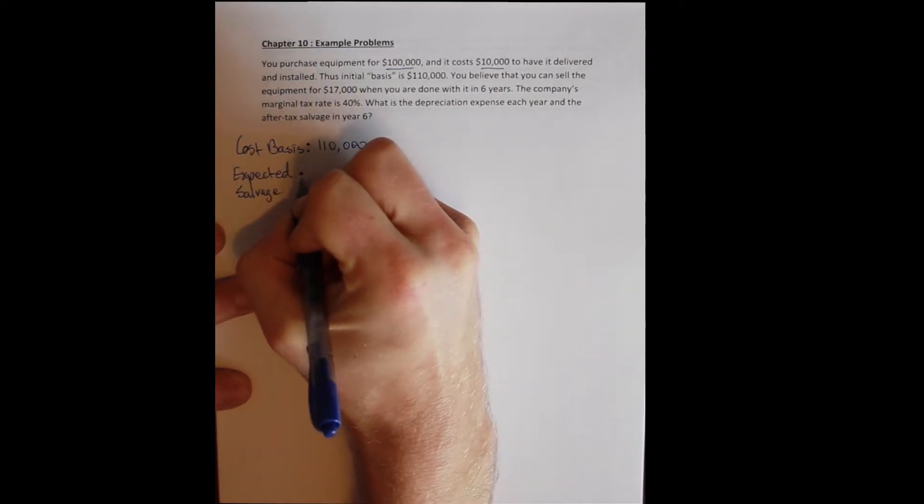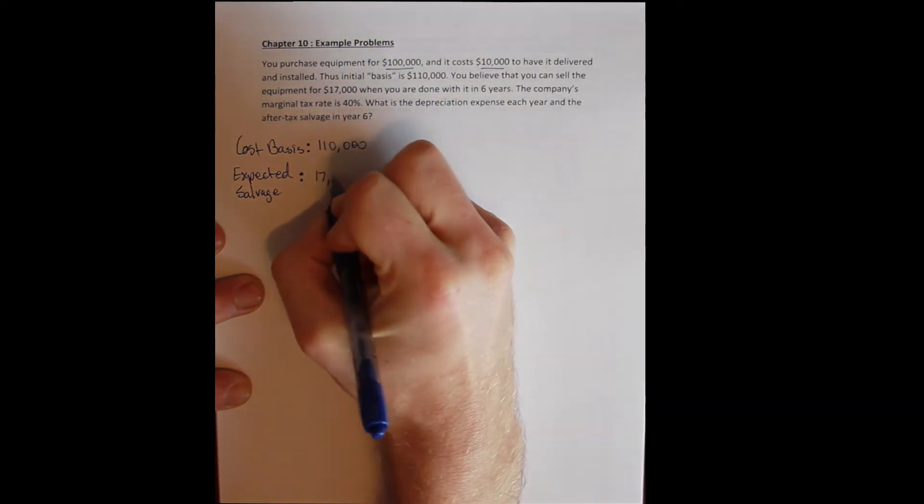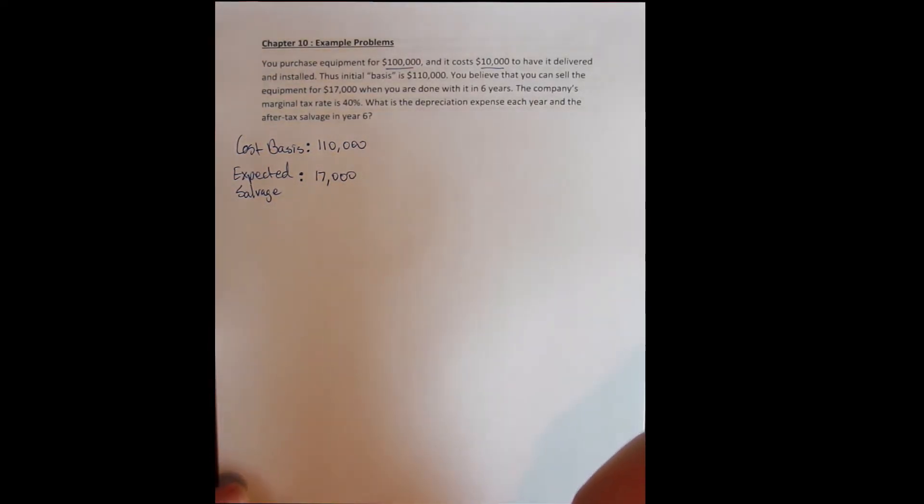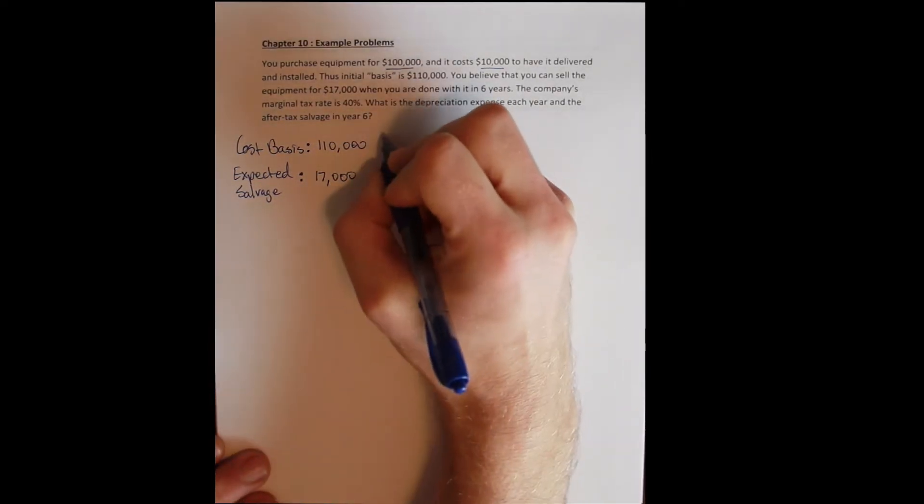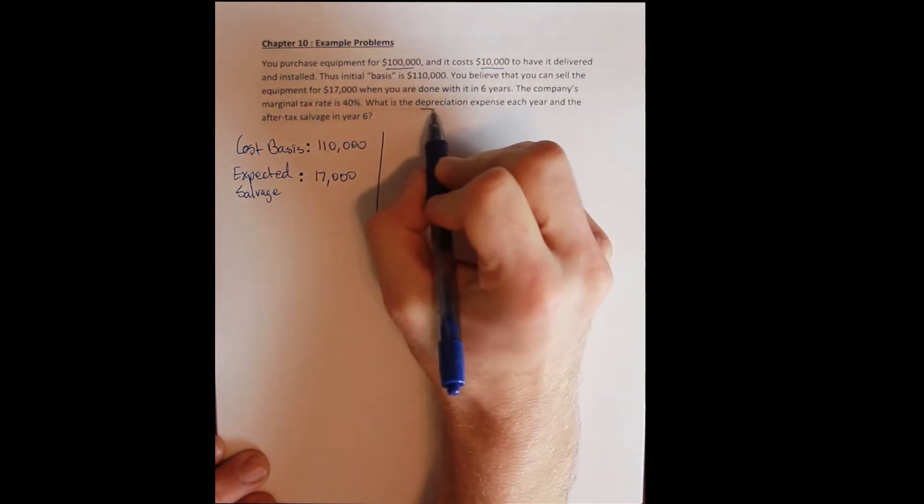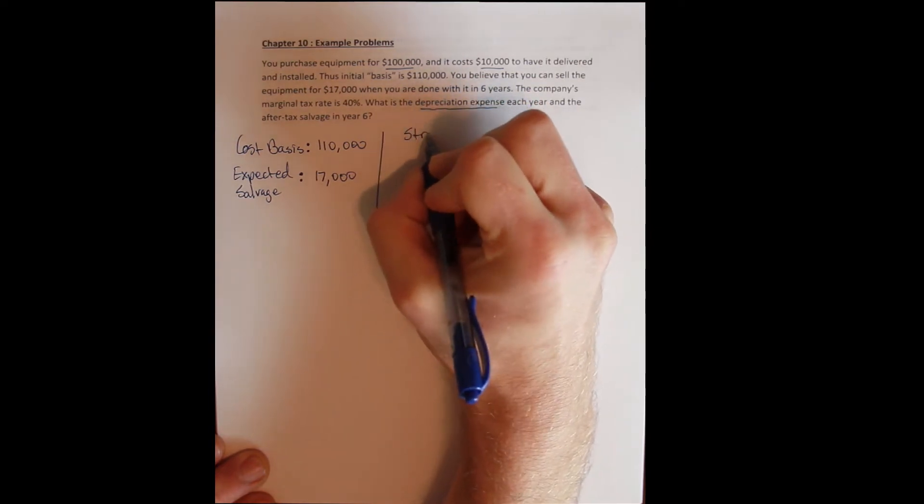Now, this is decided in advance. We're saying we think we'll be able to sell it for $17,000 when we're done with it in six years. But of course, we don't actually know until we sell it what we'll be able to recover. So we want to know what the depreciation expense is in each year. And we're going to use straight line depreciation to calculate that.